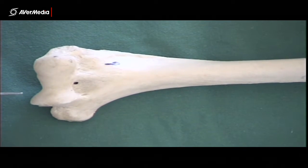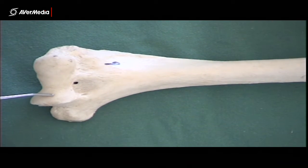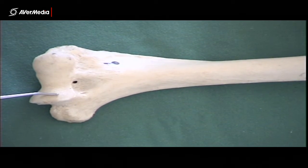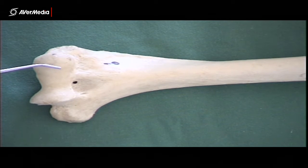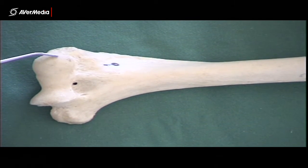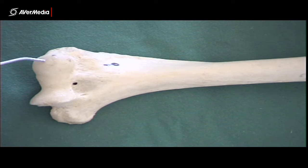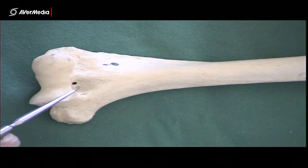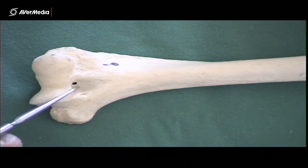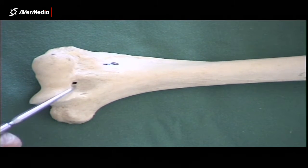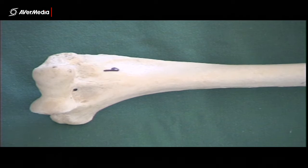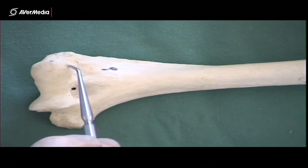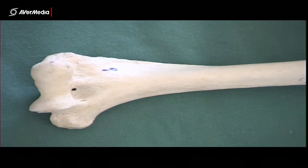In between the epicondyles naturally we have on the medial side the trochlea, the hourglass or pulley shaped articular surface there for the ulna and then the capitulum, the small round ball there to articulate with the radius. So proximal or above, just superior to the trochlea, we have the coronoid fossa and then just above the capitulum we have the radial fossa.